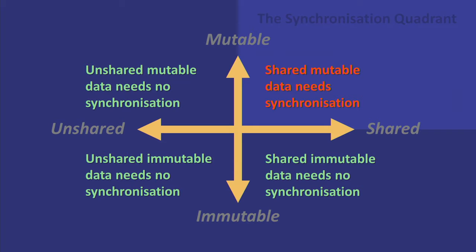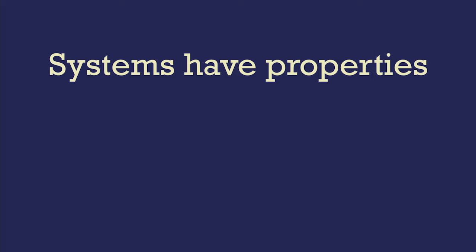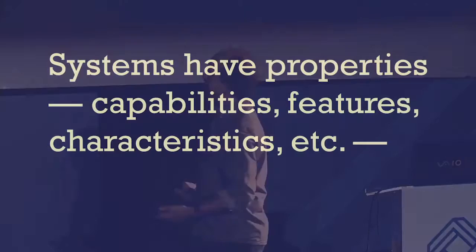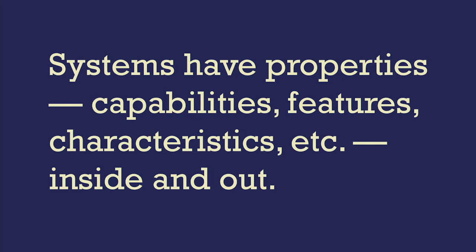I want to start looking at the properties of a system to really understand where the presence of concurrency — and our assumptions about threading and locks — make our life difficult and are inappropriate. Systems have properties, and we can talk about capabilities, features, or characteristics. What I want to characterize is the properties of the running system and the properties of the code base.